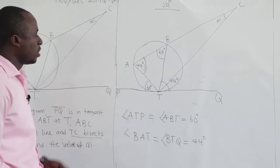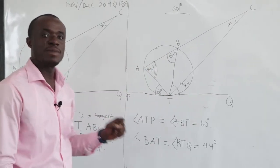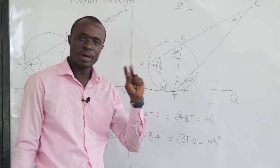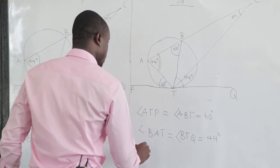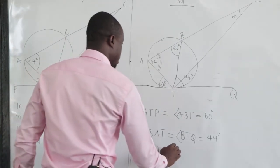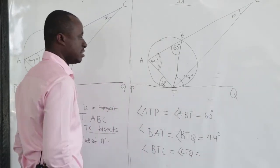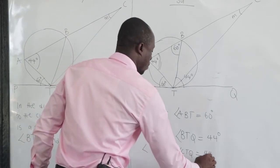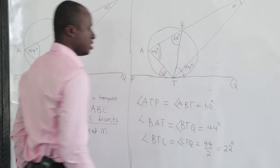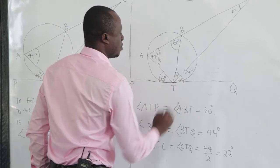We were told that TC bisects BTQ, meaning it divides that angle into two equal parts. So angle BTC equals angle CTQ, and each equals 44 divided by 2, which is 22 degrees. The angle here and the angle here are both 22 degrees.